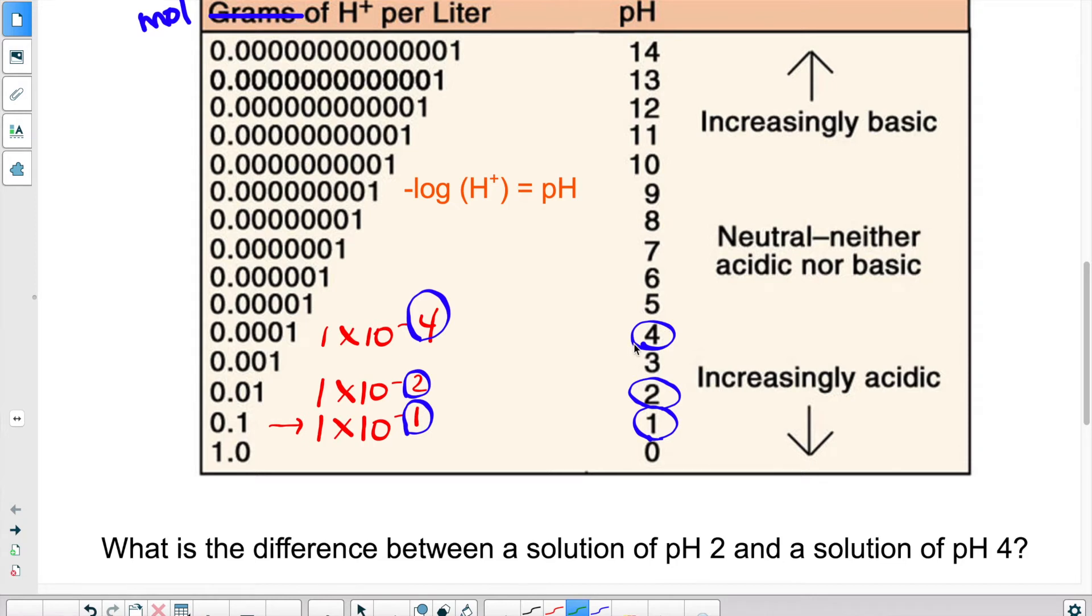There's obviously math behind that. I'm not going to go into the mathematical explanation of it, but just know that a pH of 4 basically corresponds to 1 times 10 to the negative 4 in terms of concentration of H plus ions.